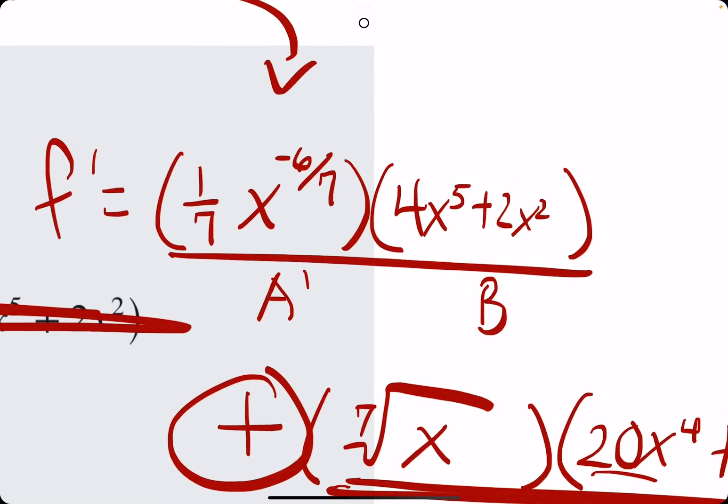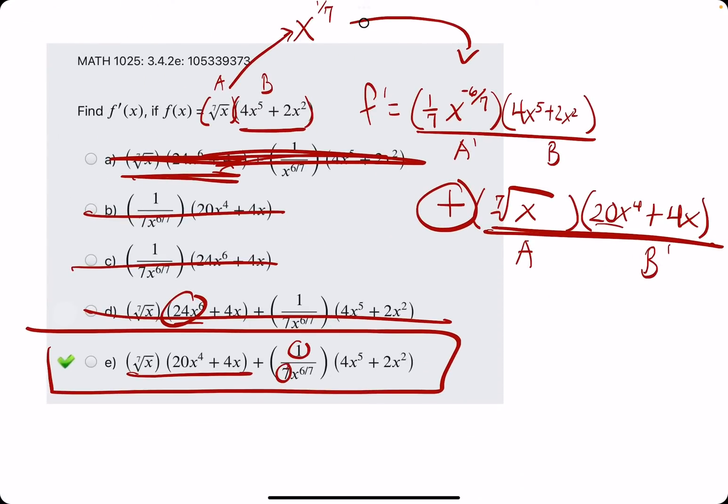And then up here, we have a 1/7th, 1/7th, x to the negative 6/7ths is the same as x to the positive 6/7ths in the denominator. And then we have the original B next to it.